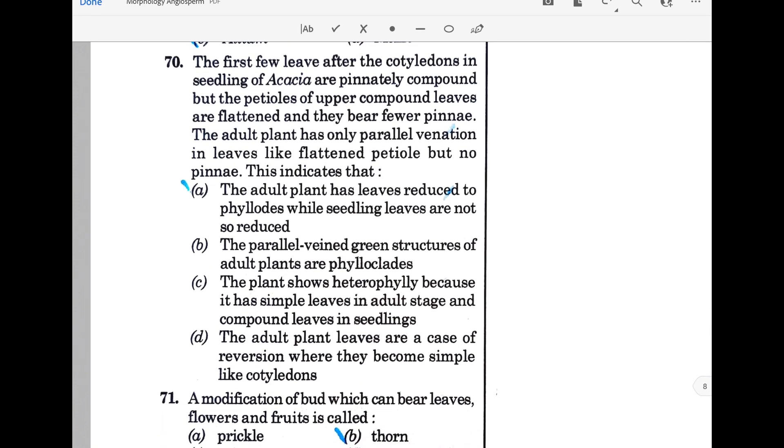The first few leaves after the cotyledon in seedlings of Acacia are pinnately compound, but the petioles of upper compound leaves are flattened and bear fewer pinnae. The adult plant has only parallel venation in leaf-like flattened petioles but no pinnae. This indicates the adult plant has leaves reduced to phyllodes while seedling leaves are not so reduced. You can pause here and write the question to understand what it is asking for.